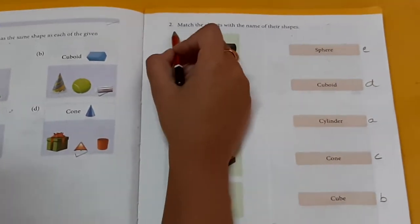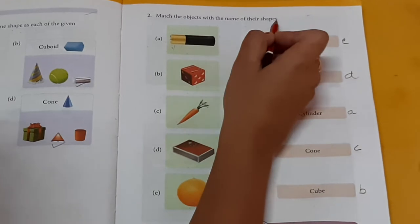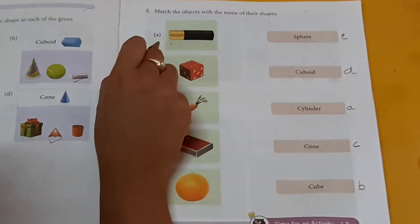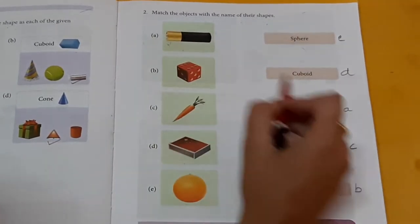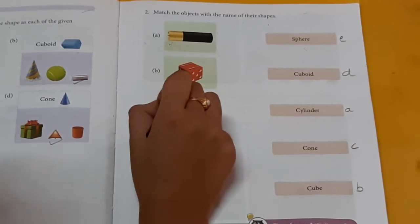Second question, match the objects with the name of their shapes. Shell. Cylinder. Cube. Dice is cube shape.